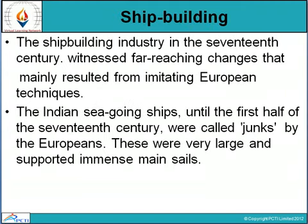Ship building in India came in the 17th century and witnessed far-reaching changes, mainly resulting from imitating European technologies. The Indian sea-going ships until the first half of the 17th century were like junks described by Europeans — very large and with immense mainsails. The imitation sometimes even improved upon the original. The Indian method of riveting planks to one another gave much greater strength than the simple clench used by European ship builders.